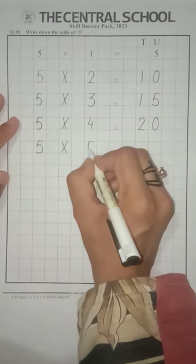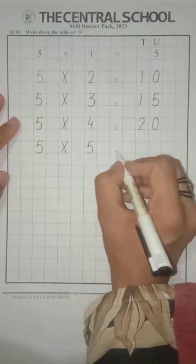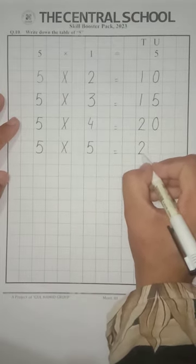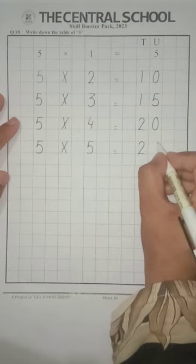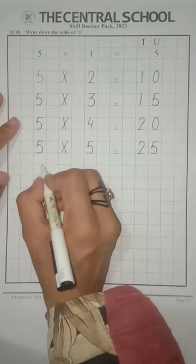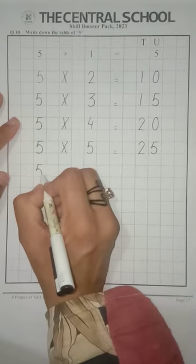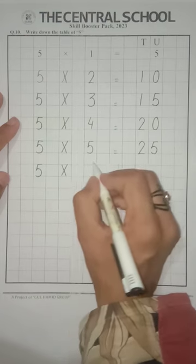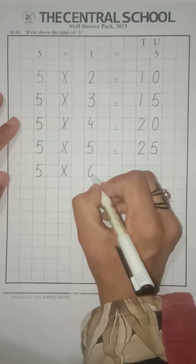5 fives are 25. Like this, you can write the 6 numbers, okay? 5 sixes are 30.